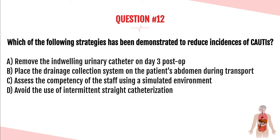Question number twelve. Which strategy has been demonstrated to reduce incidences of CAUTIs? Is it A, remove the indwelling urinary catheter on day three post-op; B, place the drainage collection system on the patient's abdomen during transport; C, assess competency of staff using a simulated environment; or D, avoid the use of intermittent straight catheterization?